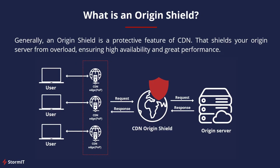So what is an Origin Shield? Generally, it is a protective feature that shields your origin servers. There is no single specific definition for this feature because Origin Shield differs across the CDNs that have it. An Origin Shield is a good idea to reduce the load on your origin server and maintain high-performance content delivery. As you can see in the picture, every request and response from CDN points of presence or edge servers should go through CDN Origin Shield first, and only if necessary go to the origin server.